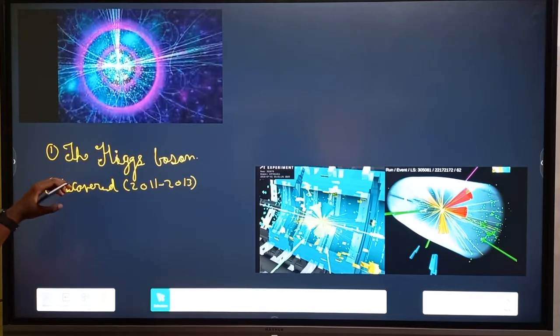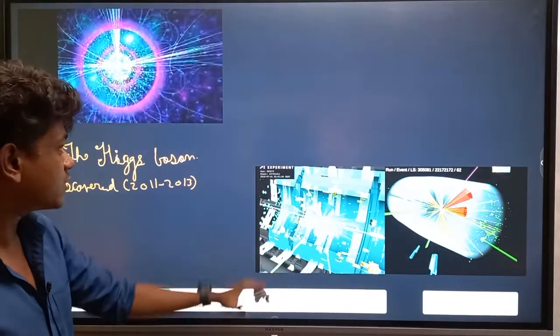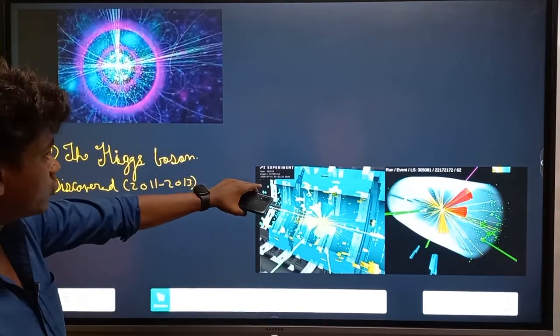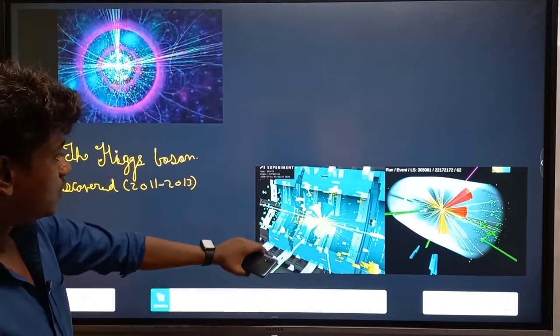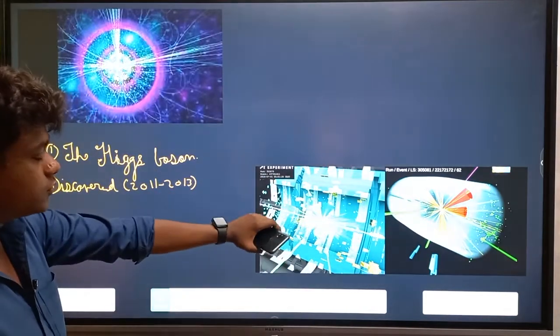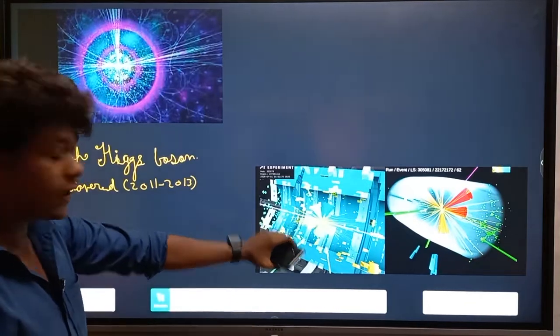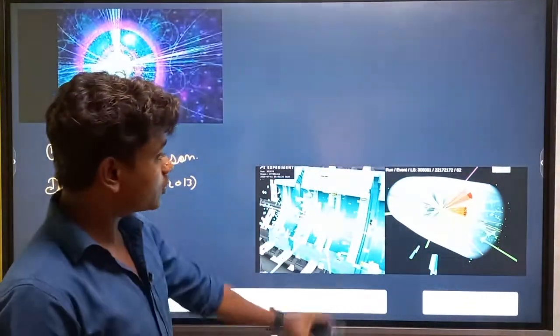And the Higgs boson was discovered in 2011 to 2013. Then the experiment was conducted on a certain event on 2016, 7-1.